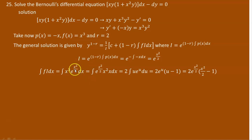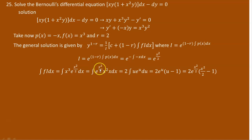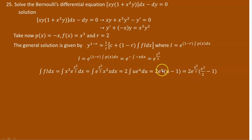Using integration by substitution, let u equal x squared over 2. Then the derivative is x dx, so x dx equals du. Now x cubed equals x squared times x, and since u equals x squared over 2, x squared equals 2u. Substituting gives 2 times the integral of u times e to the power of u du. Applying integration by parts, this equals 2 times e to the power of u times (u minus 1). Substituting back u equals x squared over 2 gives 2 times e to the power of x squared over 2 times (x squared over 2 minus 1).